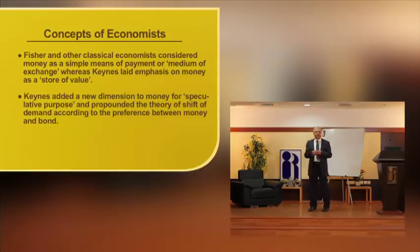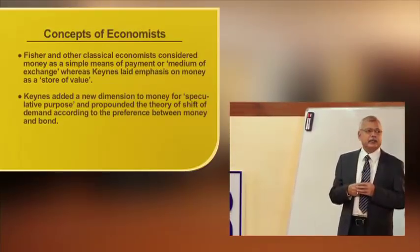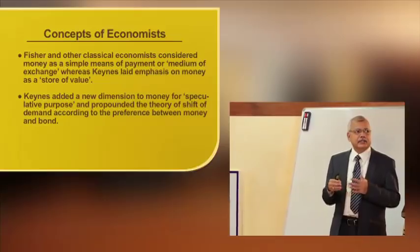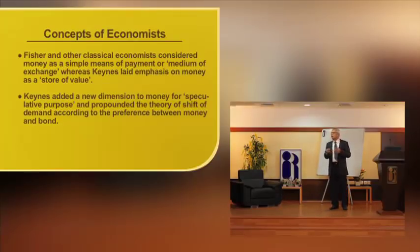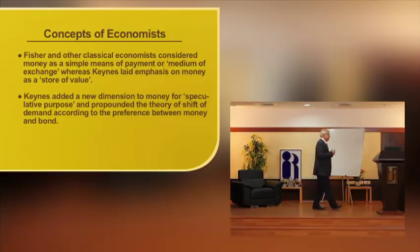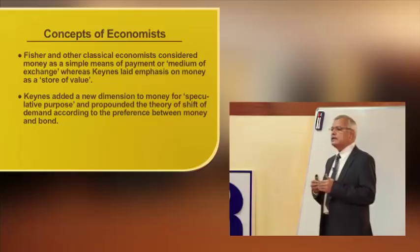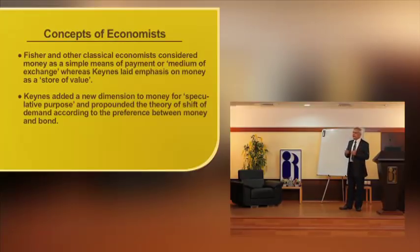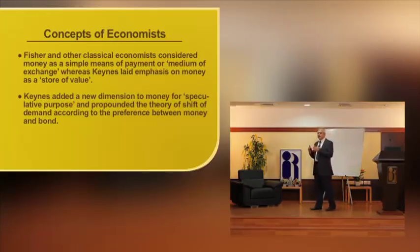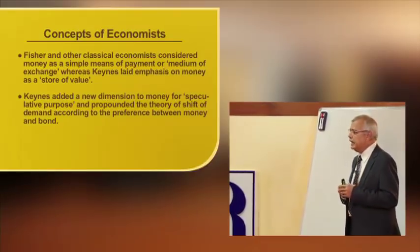There are different economists who have put forward different types of theories for determining the rate of interest. Fisher and other classical economists considered money as a simple means of payment or medium of exchange, whereas Keynes laid emphasis on the store of value. When the story of money begins, the first usage of money was as a means of exchange only; later it developed into a store of value, as money should be stored for future use.